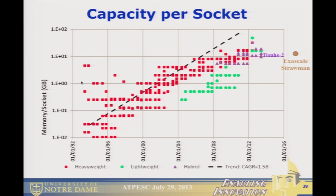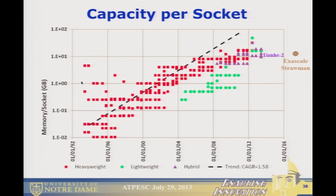Capacity per core is the one that's really important to you as a software designer: how much memory does each core that's running a thread have to deal with? We had a nice rise through time, but it looks like we're at best flat, if not going in the wrong direction. On the exascale machine with 166 million cores, you had almost nothing per core — just a few megabytes.